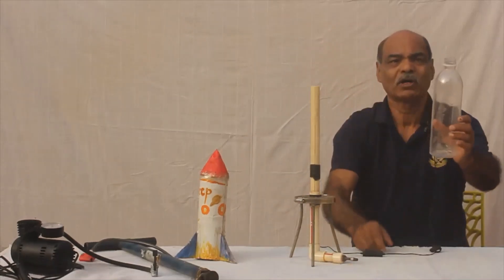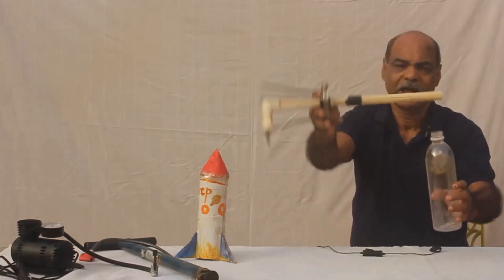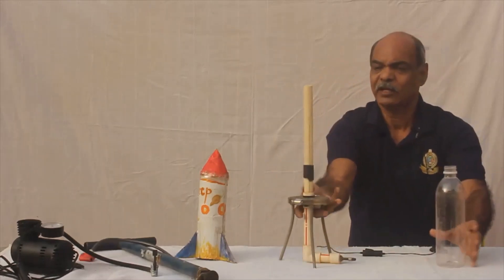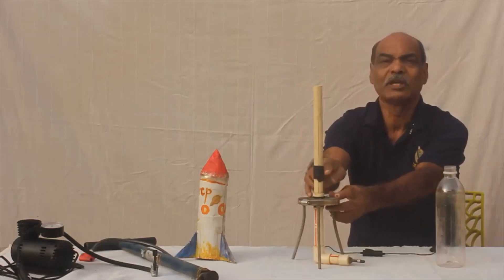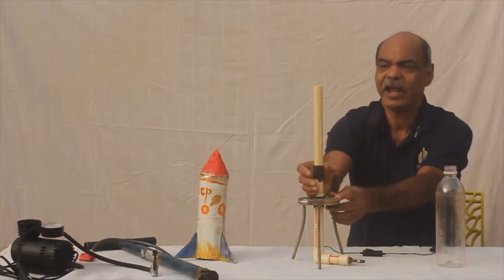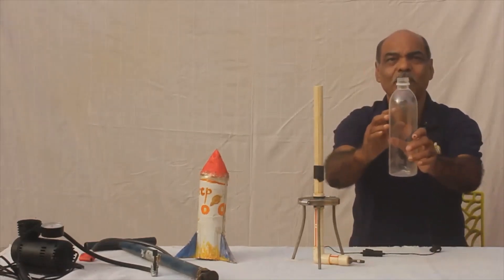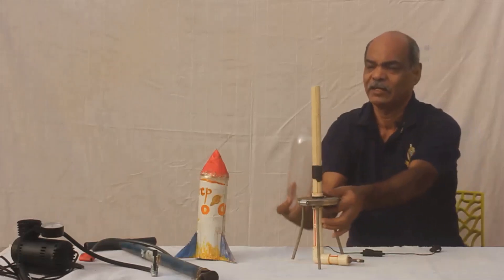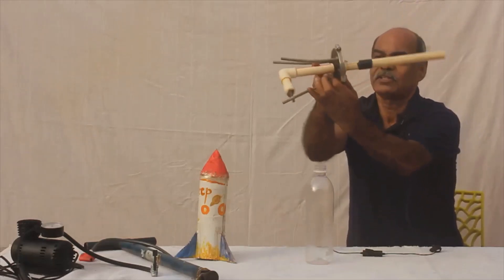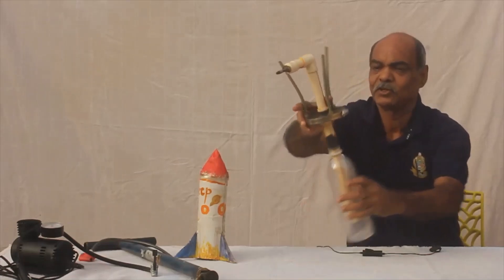We fill the bottle three-fourths with water. Before that, I will tell you there is also a rubber tubing here which fits tightly into the neck of the bottle and acts like a friction hold. We fill three-fourths with water and fix the tube into the bottle.